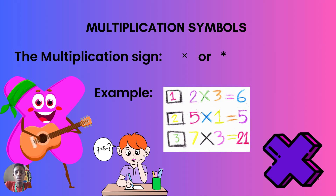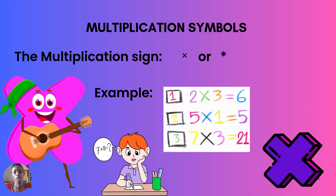These are some examples of how we use our signs and symbols. The signs are placed in between the numbers in a question. For example: two times three — the multiplication sign is between two and three, meaning two multiplied by three, which equals six. Similarly, five times one equals five, and seven multiplied by three gives us its product.